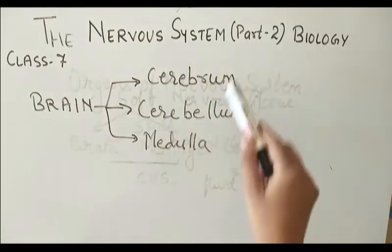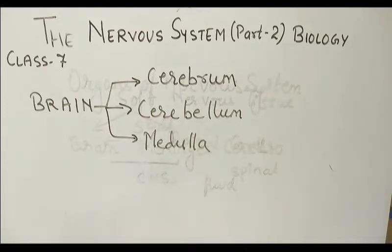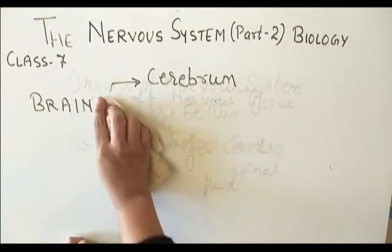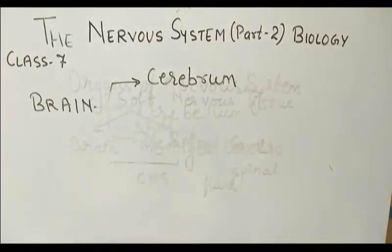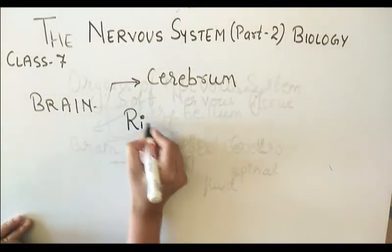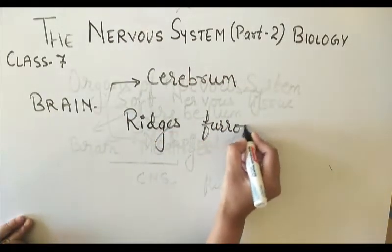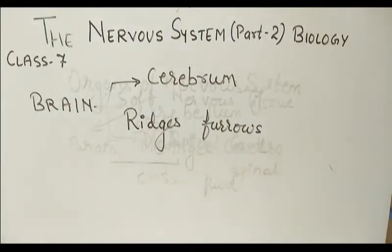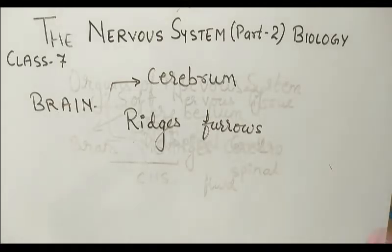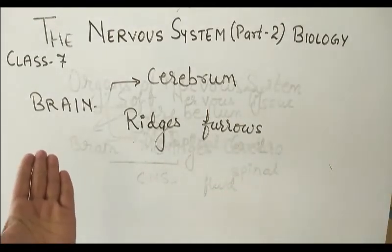The cerebrum is the largest part of our brain. If we discuss about the shape of the cerebrum, it looks like a walnut. The cerebrum has ridges and furrows, which are present to accommodate a large number of neurons. The cerebrum is divided into two hemispheres — the right hemisphere and the left hemisphere.